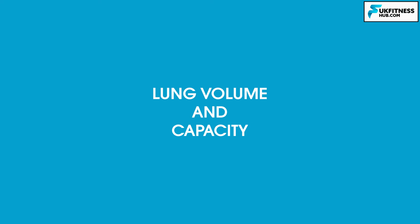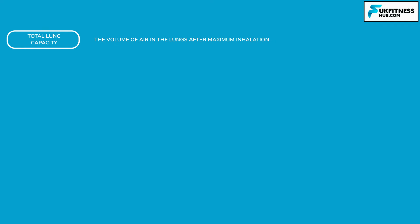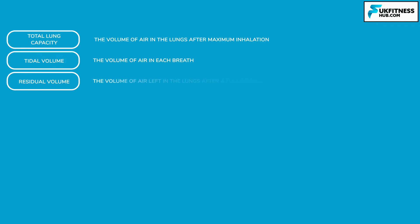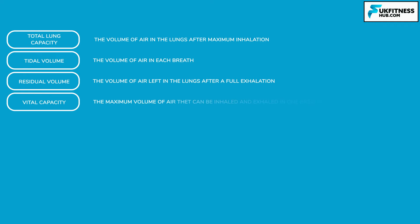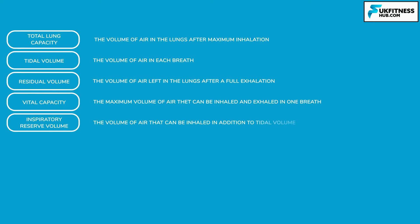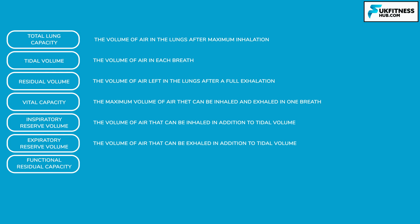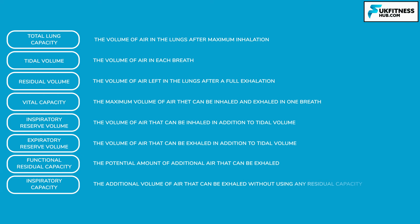Now let's move on to lung volume and capacity. It's important to understand some key terms. Total lung capacity is the volume of air in the lungs after maximum inhalation. Tidal volume is the volume of air in each breath. Residual volume is the volume of air left in the lungs after full exhalation. Vital capacity is the maximum volume of air that can be inhaled and exhaled in one breath. Inspiratory reserve volume is the volume of air that can be inhaled in addition to tidal volume. Expiratory reserve volume is the volume that can be exhaled in addition to tidal volume. Functional residual capacity is the potential amount of air that can be exhaled, and inspiratory capacity is the additional volume of air that can be exhaled without using any residual capacity.